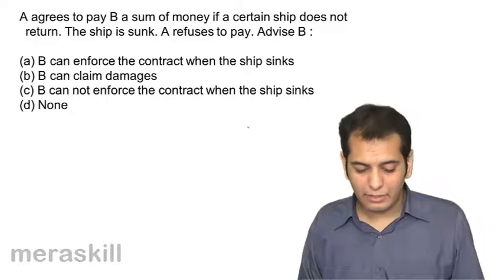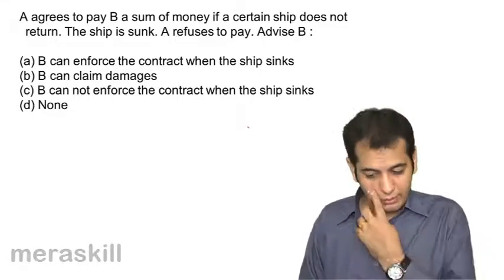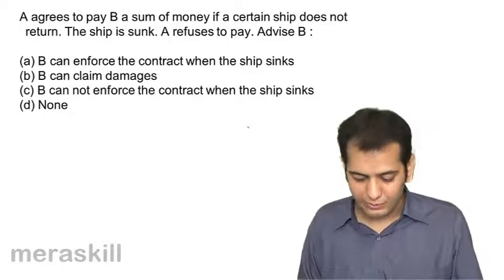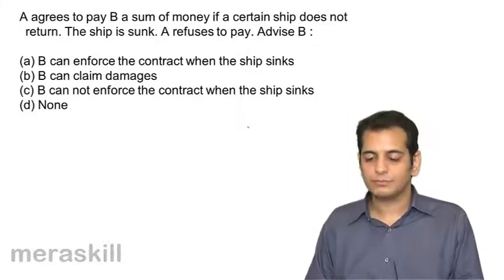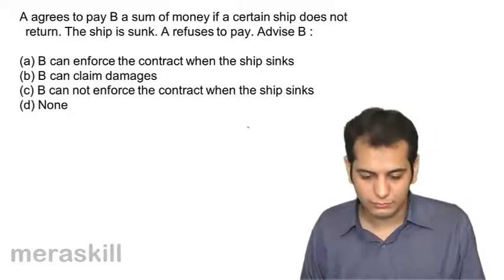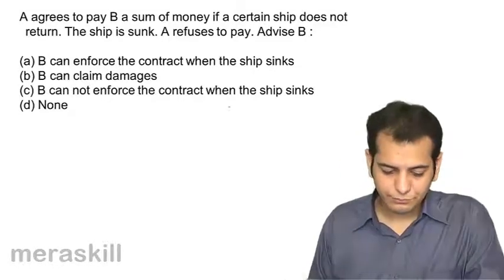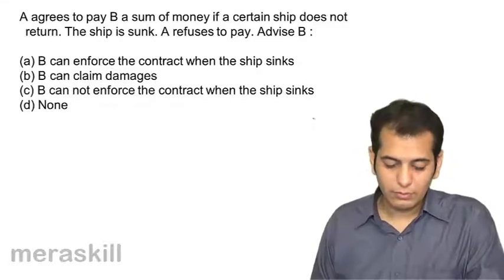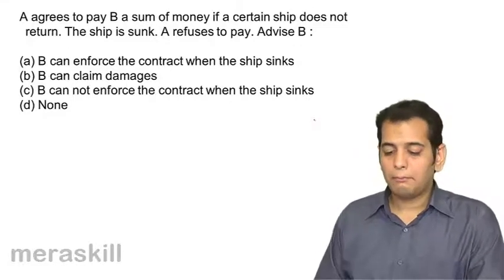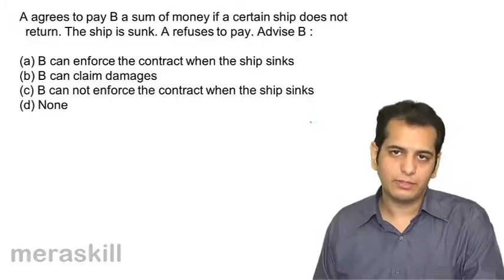Option B: B can claim damages. Option C: B cannot enforce the contract when the ship sinks. Option D: None. The answer is: B can enforce the contract when the ship sinks.